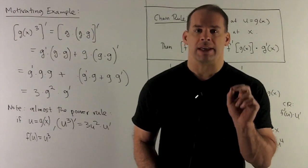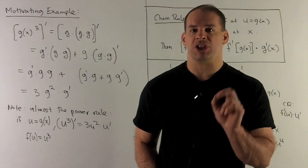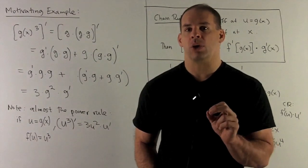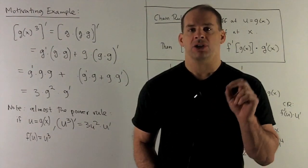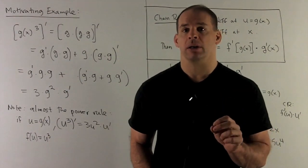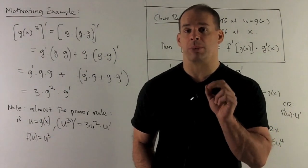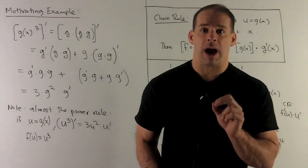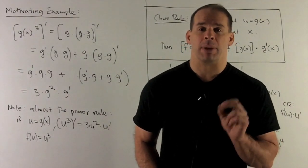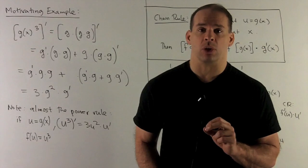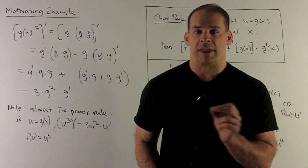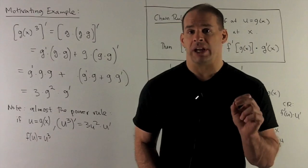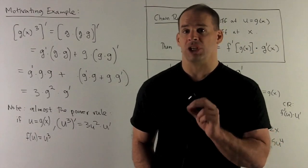I can consider g cubed as g times g squared. If I apply the derivative, this is just going to be the product rule. That'll give me g prime times g squared plus g times the derivative of g squared. Then we can get the derivative of g squared by applying the product rule again, expand that out, collect things, and we wind up with 3g squared times g prime.